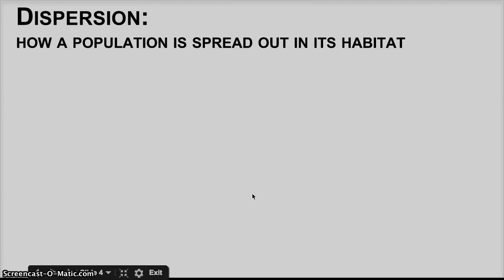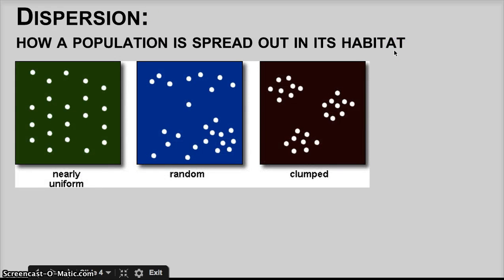We can also look at dispersion, how a population is spread out in its habitat. There are three commonly accepted patterns of dispersion. Some are more common than others.